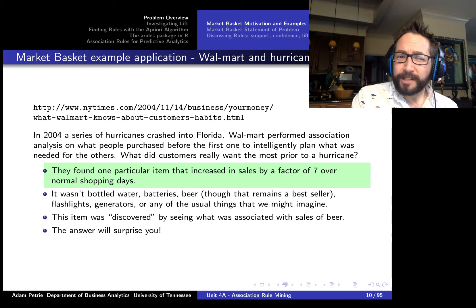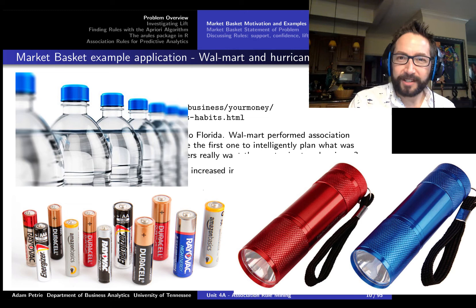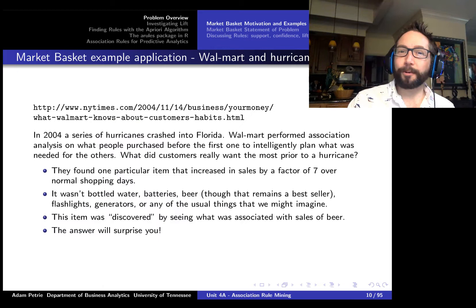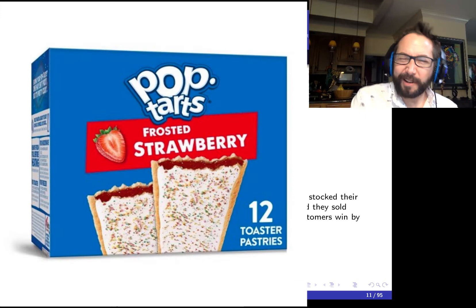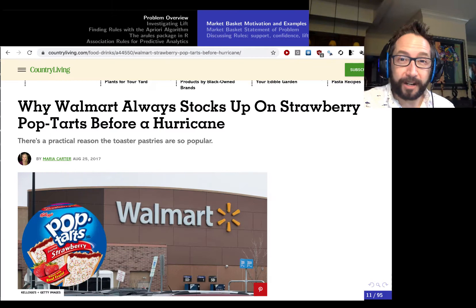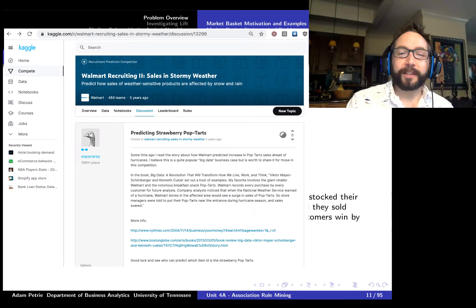Obviously, clearly a staple if you're going to prepare for a disaster. And it wasn't something obvious. It wasn't something like bottled water or batteries, flashlights, generators, etc. The answer truly is shocking. So what was this product? Well, surprise, surprise, it turned out to be strawberry pop tarts. Now, in retrospect, it's not all that surprising. Pop tarts don't require any refrigeration or cooking. They're individually wrapped. They have long shelf life. Kids love them. Everyone loves them. And so it makes sense that people would purchase a lot of strawberry pop tarts.